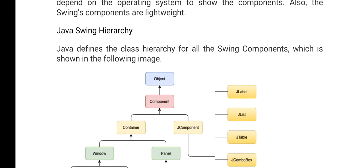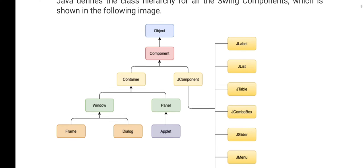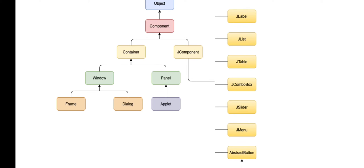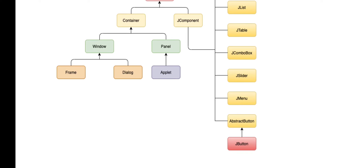Here you can see the hierarchy. Same as AWT, components are again divided into two things: containers and JComponent. JComponent is again divided into JLabel, JList, JTable, JCombo, JSlider — such things already explained in AWT.